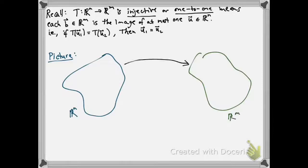So let's take a picture of what an injective linear transformation might look like. So if I have U1 in R^n, it's going to get mapped to T of U1 in R^m. If I have a different point, U2 in R^n, it's going to get mapped to a different point, T of U2 in R^m.